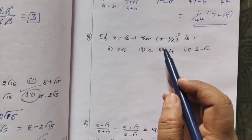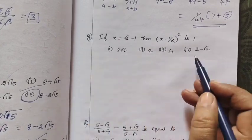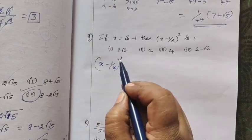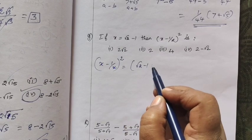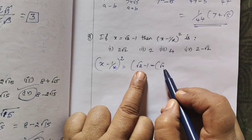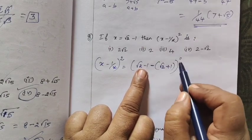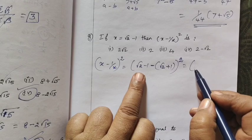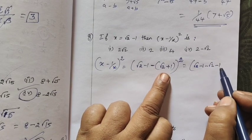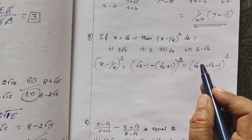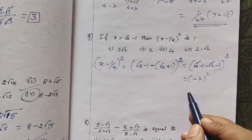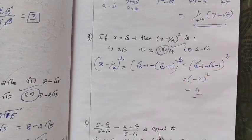If x equals root 2 minus 1, find (x minus 1 by x) whole squared. Directly write: x minus 1 by x equals (root 2 minus 1) minus the conjugate (root 2 plus 1). Taking the minus sign inside: root 2 minus 1 minus root 2 minus 1. The root 2 cancels, leaving minus 2. Whole squared equals 4. So option 3 is the correct answer.